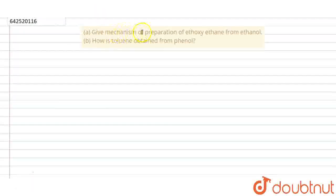Our question is: give mechanism of preparation of ethoxyethane from ethanol. Next question is: how is toluene obtained from phenol?